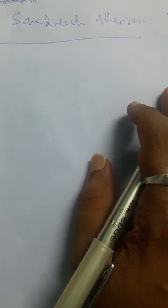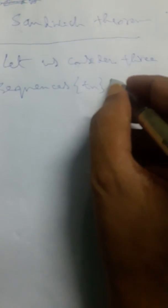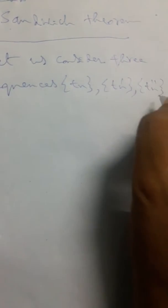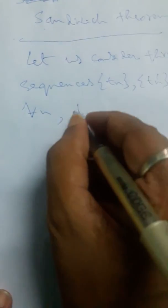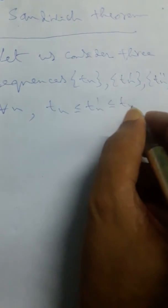First we state what the theorem is. Let us consider three sequences: tₙ, t′ₙ, and t″ₙ. For all n, we have that tₙ ≤ t′ₙ ≤ t″ₙ.